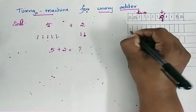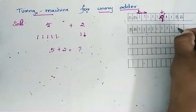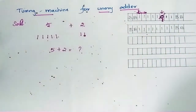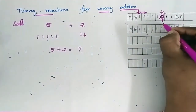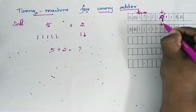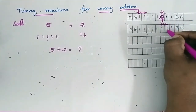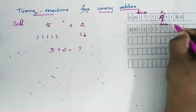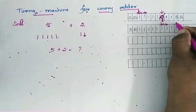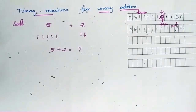So now the string looks like: the five 1s, then the replaced 1, then the two 1s of the second number, followed by blank spaces. After replacing the 0 by 1, the tape head starts moving right. The 1s are kept as such and it moves until it encounters a blank space, at which point it starts moving left.